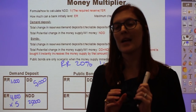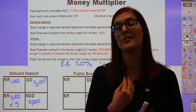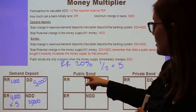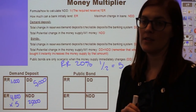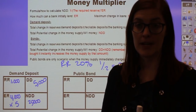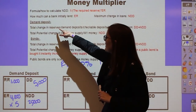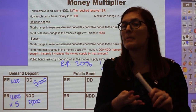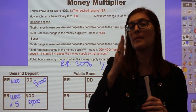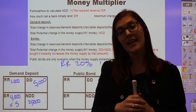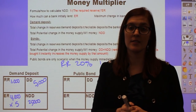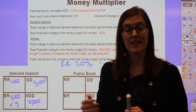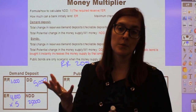The third question is: how much could the money supply potentially increase by? Nothing was created initially because that money existed before, but the $20,000 created from loans going bank to bank does represent new money — so $20,000 is the amount the money supply could potentially increase by. The final question asks about total change in reserves, demand deposits, checkable deposits, or the banking system — all the same idea. The answer is DD plus NDD, or $25,000. And the maximum potential change in loans is just NDD — $20,000.